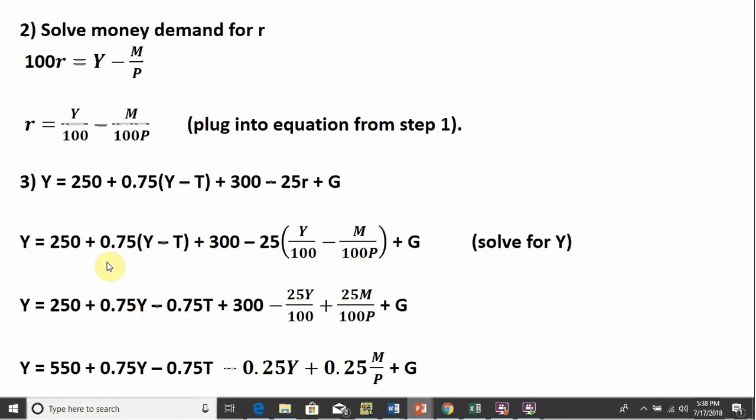So the first thing I do, I take this 0.75 and multiply it through by what's in parentheses. So we get the 0.75Y and minus 0.75T, where T is taxes. The 300 is still here.